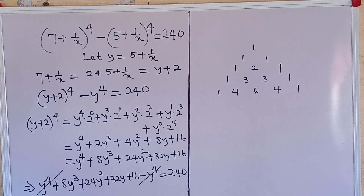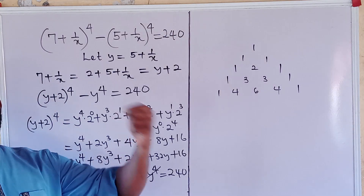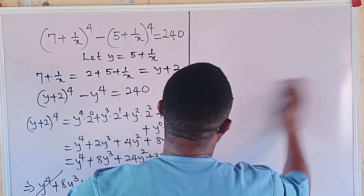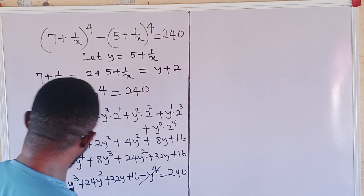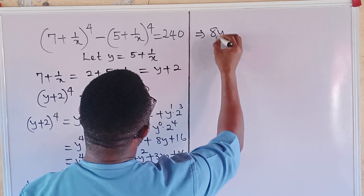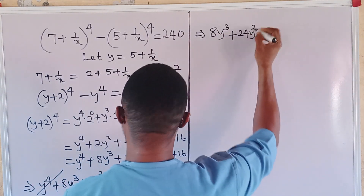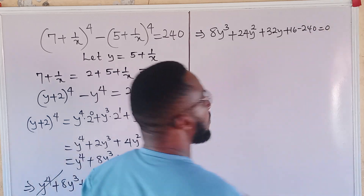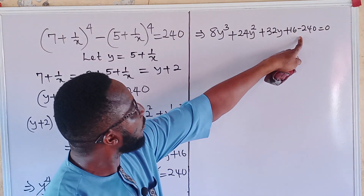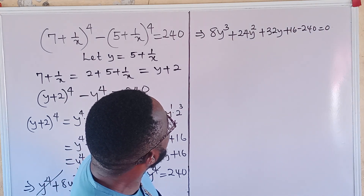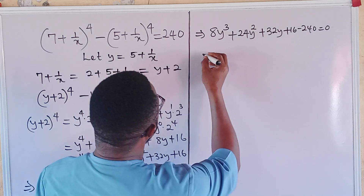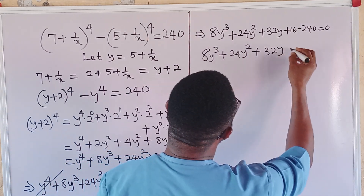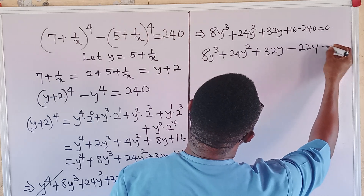The y^4 terms cancel out, giving us a clean cubic equation. Collecting like terms and moving 240 to the left, we get: 8y^3 + 24y^2 + 32y + 16 minus 240 equals 0, which simplifies to 8y^3 + 24y^2 + 32y minus 224 equals 0.